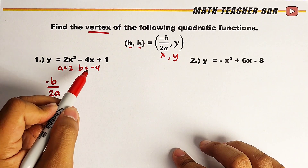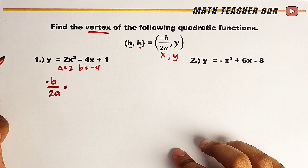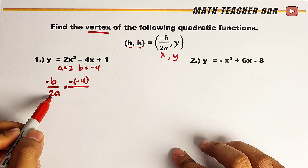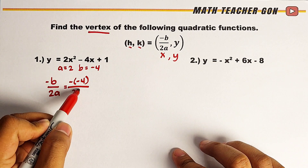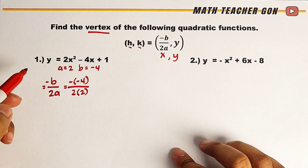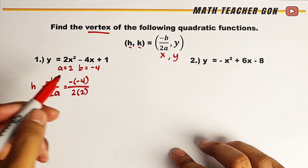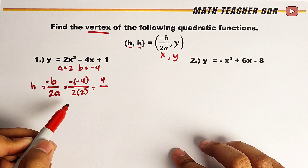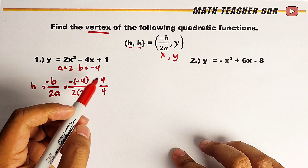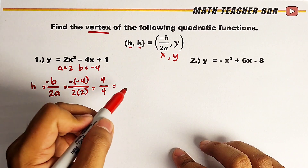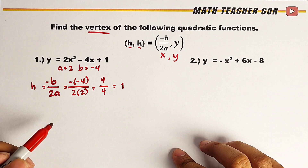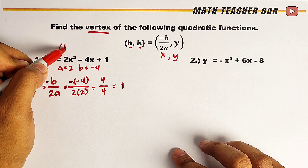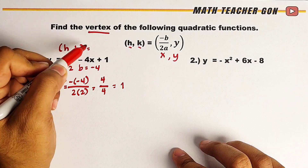Now we will plug in to our formula. We have negative 4 as the value of b, so it's negative times negative 4 over 2 times a, which is 2. This is for the value of h. Simplify: negative times negative gives positive 4, over 2 times 2 which is 4. So the value of h is simply 1.